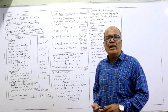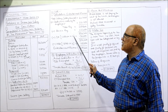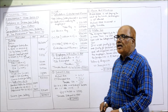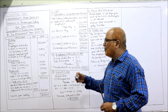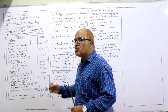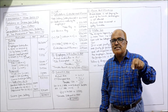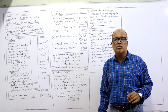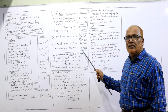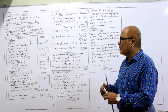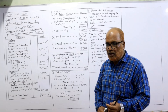For allowances: dearness allowance is eleven thousand per month × 12 = one lakh thirty-two thousand. HRA is thirteen thousand seven fifty per month × 12 = one lakh sixty-five thousand, fully taxable since HRA exemption under Section 10(13A) is not allowed as the assessee lives in his own house for which no rent is paid. Entertainment allowance has been calculated as two lakh nine thousand two hundred.